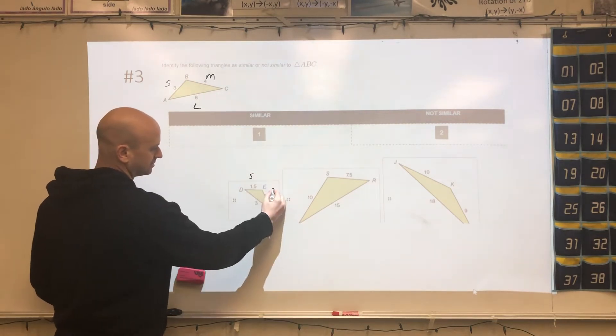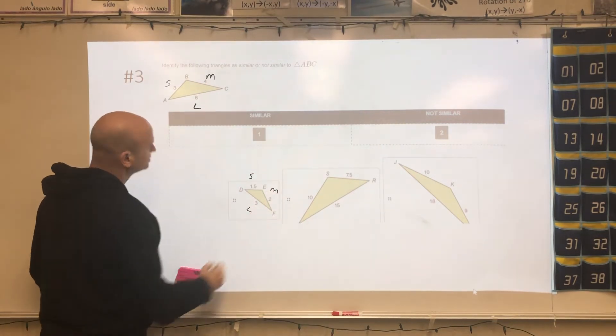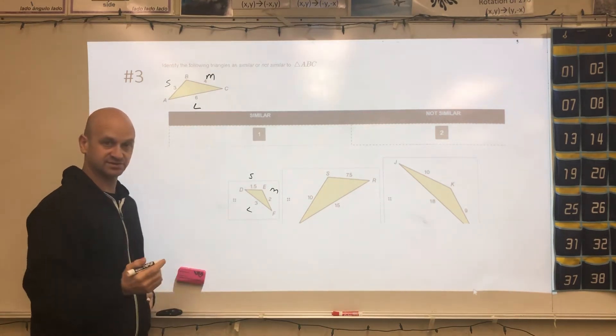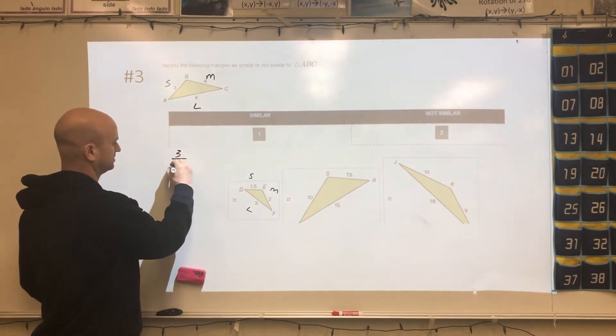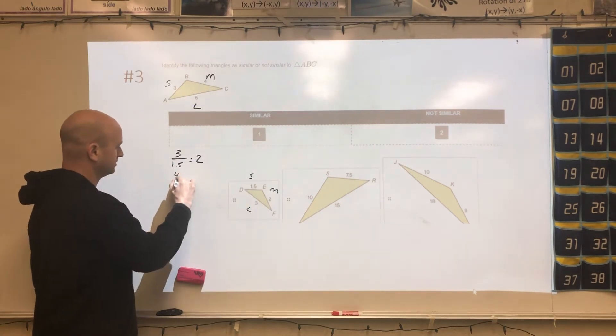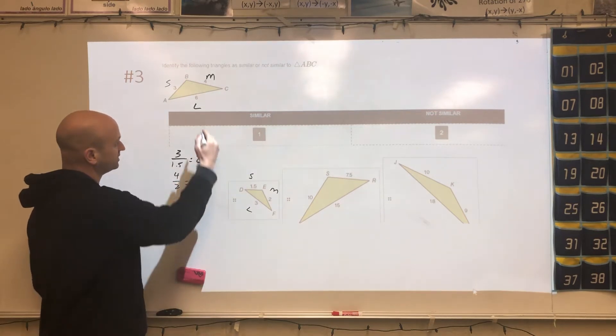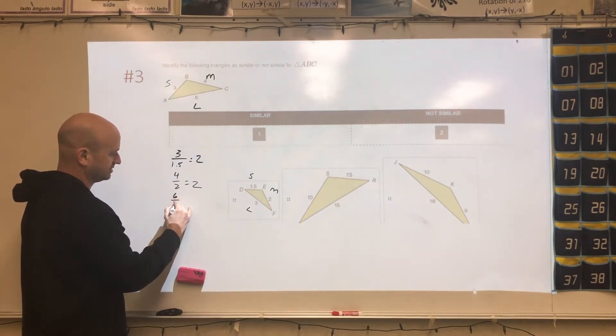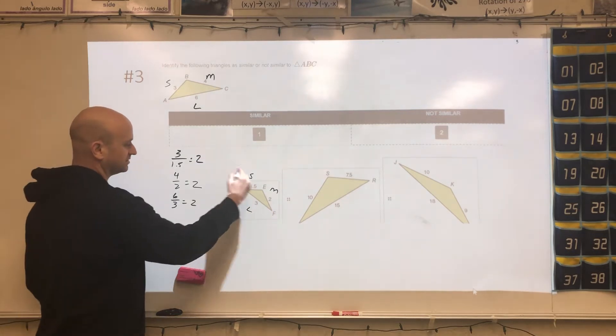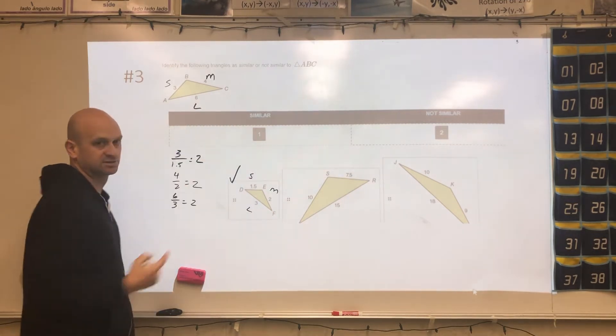So down here, this would be small, medium, and large. So 3 divided by 1.5 is 2. I have 4 divided by 2, which is 2, and then 6 divided by 3, which is 2. So since all these are the same, this triangle is similar to that one.